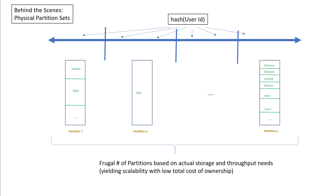Cosmos DB will provision a number of physical partitions underneath based on your actual storage consumption as well as the amount of throughput you have provisioned. For example, if Cosmos DB has determined that four physical partitions are sufficient so that the workload has no bottleneck on storage or throughput, it will divide the spectrum of hashed partition key values from zero to max value into quarters, each mapping to one physical partition. By compacting a high number of partition keys into a smaller number of physical partitions, you get a very low total cost of ownership.